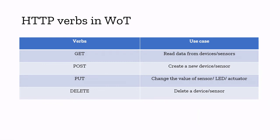There are four common HTTP verbs used in Web of Things development. GET is used to read sensor data. POST is used to create a device. PUT is used to update the state of an LED, sensor, or actuator. DELETE is used to remove a device. These four HTTP verbs are the core REST API requests you will be making in WoT development.